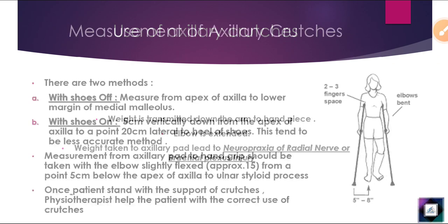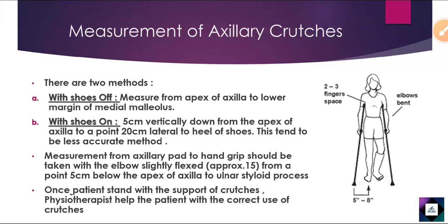Next is measurement of axillary crutches. There are two methods: shoes off and shoes on. The shoes-off method is the most accurate. Measurement is from the apex of the axilla to the lower margin of the medial malleolus. On one side we have lateral malleolus and on the other side medial malleolus — measure to the lower margin.